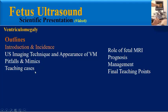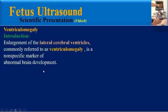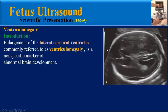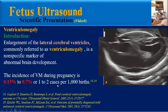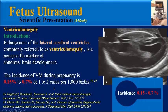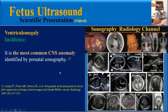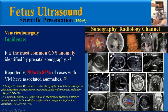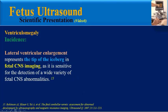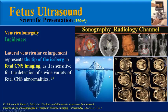Enlargement of lateral cerebral ventricles, commonly referred to as ventriculomegaly, is a non-specific marker of abnormal brain development. The incidence during pregnancy is less than 1%, or 1 to 2 cases per 1,000 births. It is the most common CNS anomaly identified by prenatal sonography, with about 70 to 85% of cases having associated anomalies.